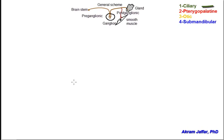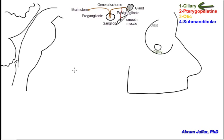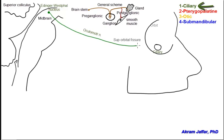The ciliary ganglion is located in the posterior portion of the orbit on the lateral side of the optic nerve. It's a very small body that's difficult to find in dissections. The preganglionic fibers that relay in the ciliary ganglion have their cell bodies located in the Edinger-Westphal nucleus, which is associated with the motor nucleus of the oculomotor nerve in the upper part of the midbrain. Thus, the fibers accompany the oculomotor nerve that passes through the superior orbital fissure.